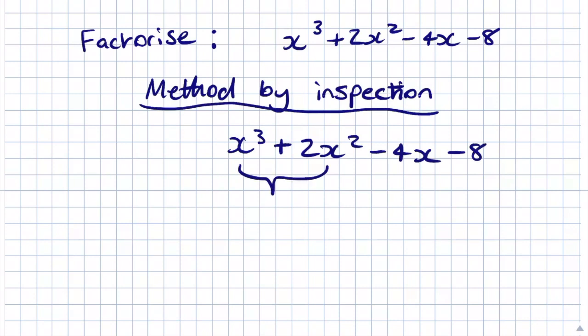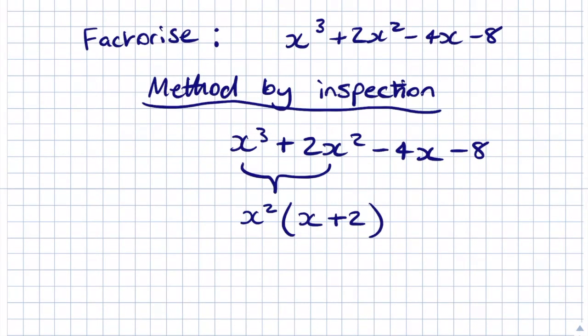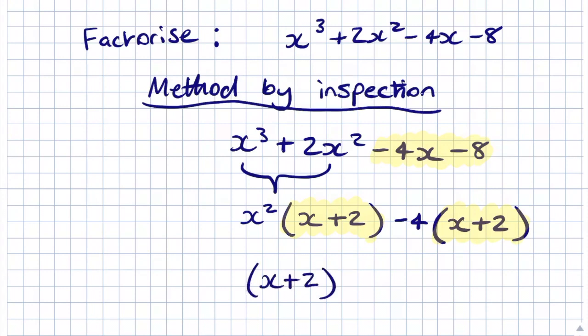Looking at the first two terms, we can see there is a common factor of x². Factorising out x² gives us x²(x + 2), so our common factor is (x + 2). We now need to factorise -4x - 8 to get a factor of (x + 2), which we can do by factorising out -4, giving us -4(x + 2). We can then factorise the whole equation by (x + 2), giving us (x + 2)(x² - 4).